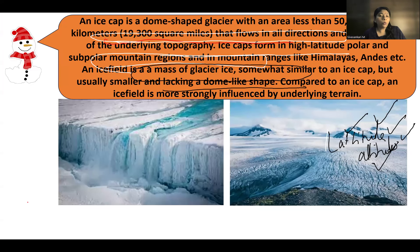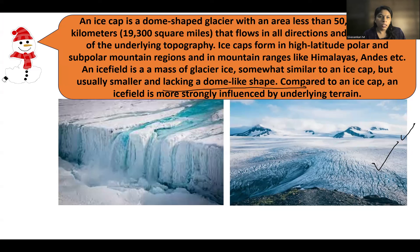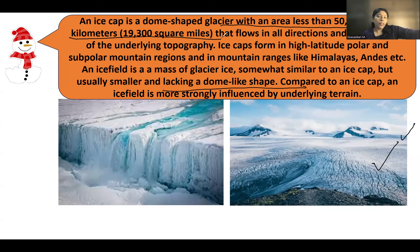Below 50,000 square kilometers, we can differentiate glacial formations by different names. The next topic is the ice cap. Like an ice sheet, an ice cap is a mass of glacial ice, but an ice cap is dome-shaped and its area should be less than 50,000 square kilometers. So keep this in mind — ice caps are dome-shaped glaciers with area less than 50,000 square kilometers.